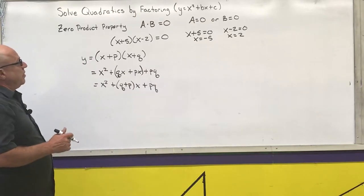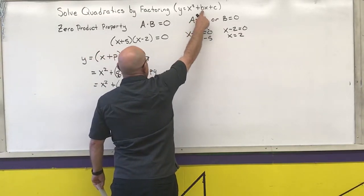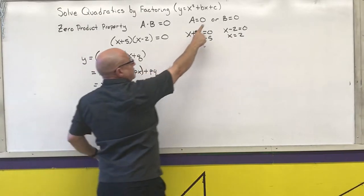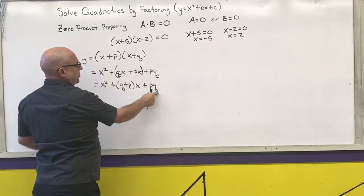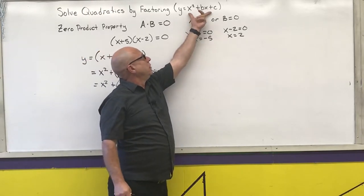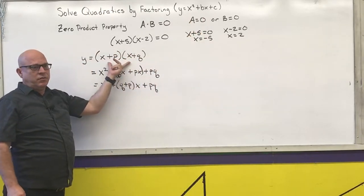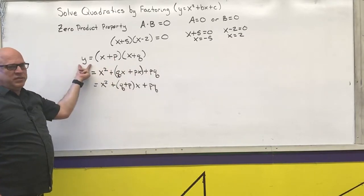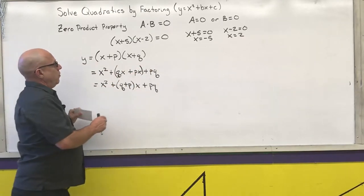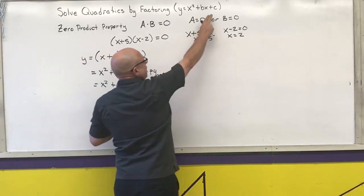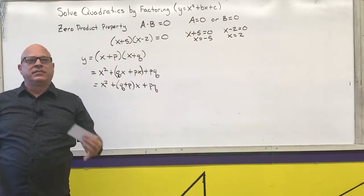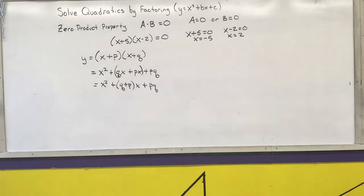So the middle coefficient b is these two numbers p and q added together, and the last term c is these two numbers multiplied together. We're going to use that fact to work backwards — taking a trinomial in standard form and factoring it into two binomials. To do that, we need to find two numbers that multiply to the last number c and add to the middle coefficient b.